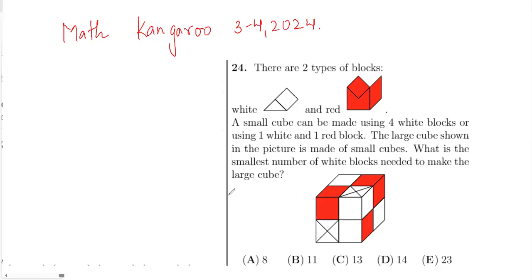There are two types of blocks: white and red. A small cube can be made using four white blocks or using one white and one red block. The large cube shown in the picture is made up of small cubes. What is the smallest number of white blocks needed to make the large cube?